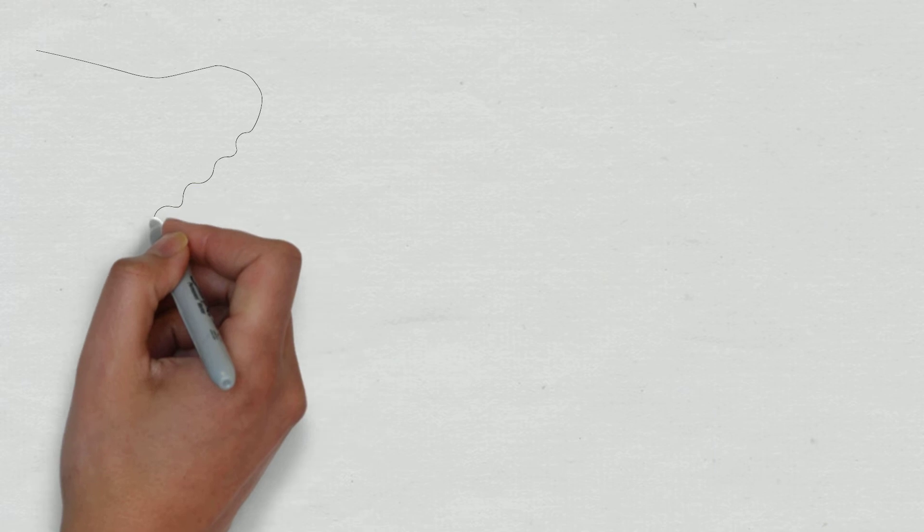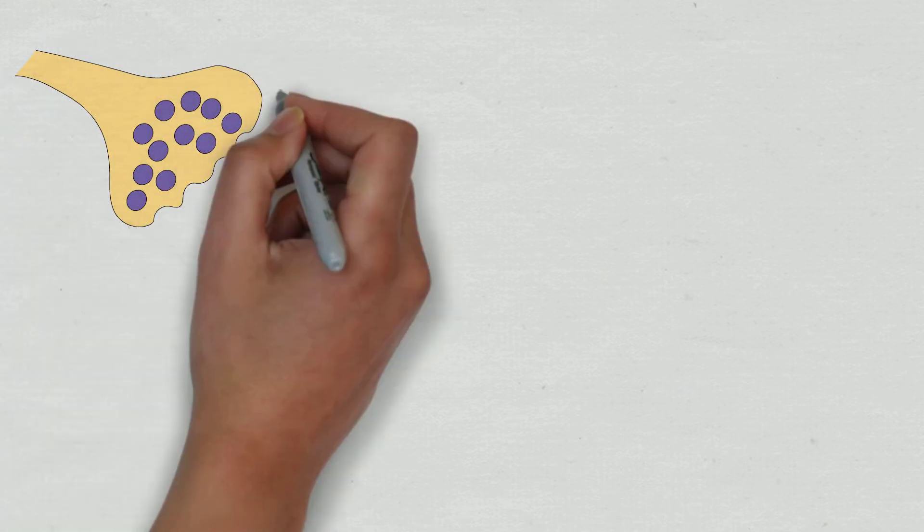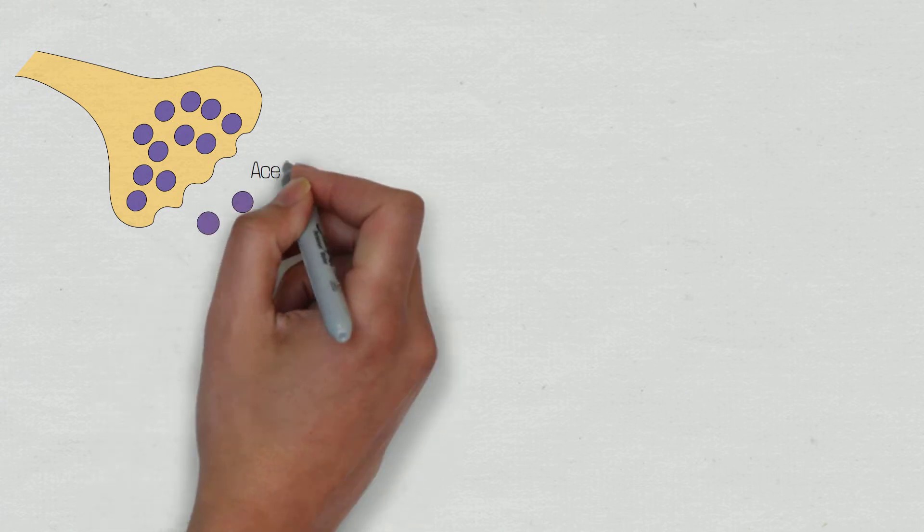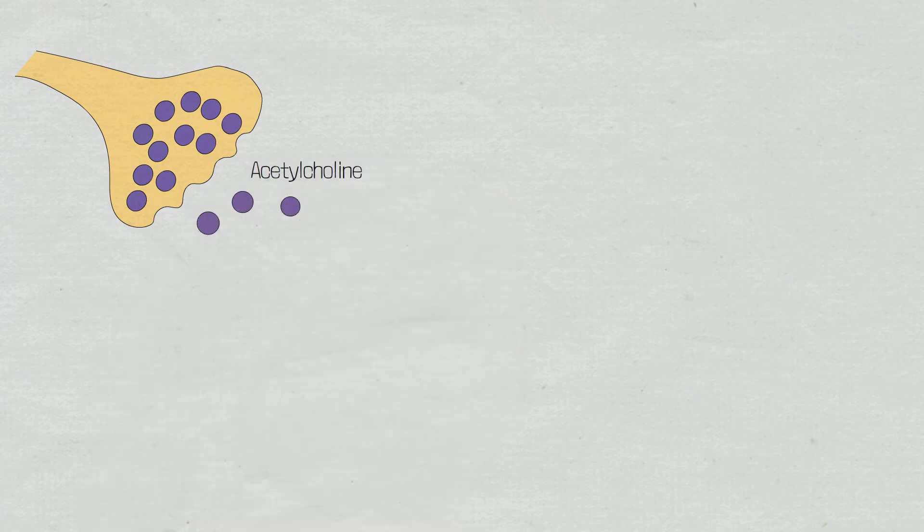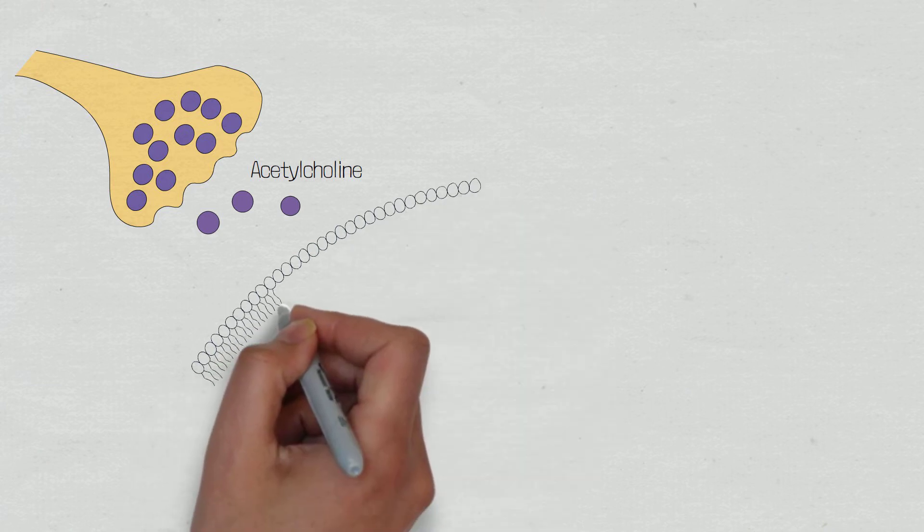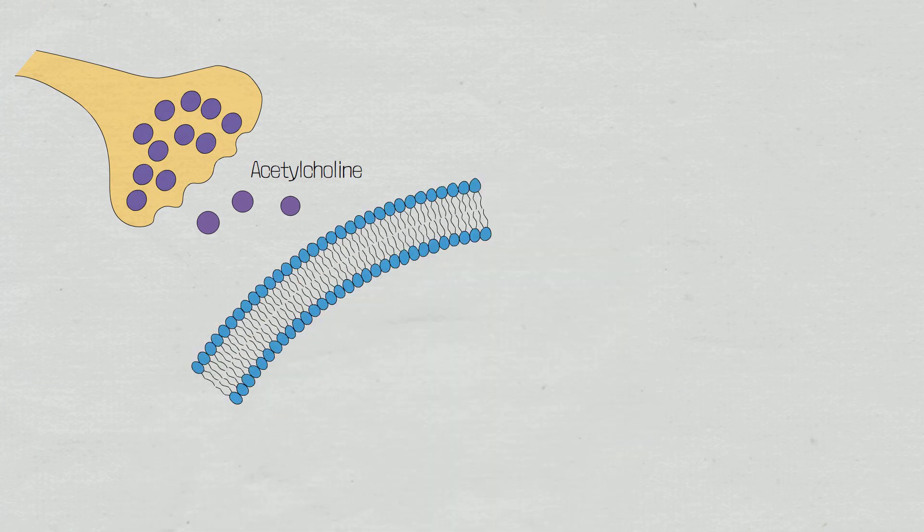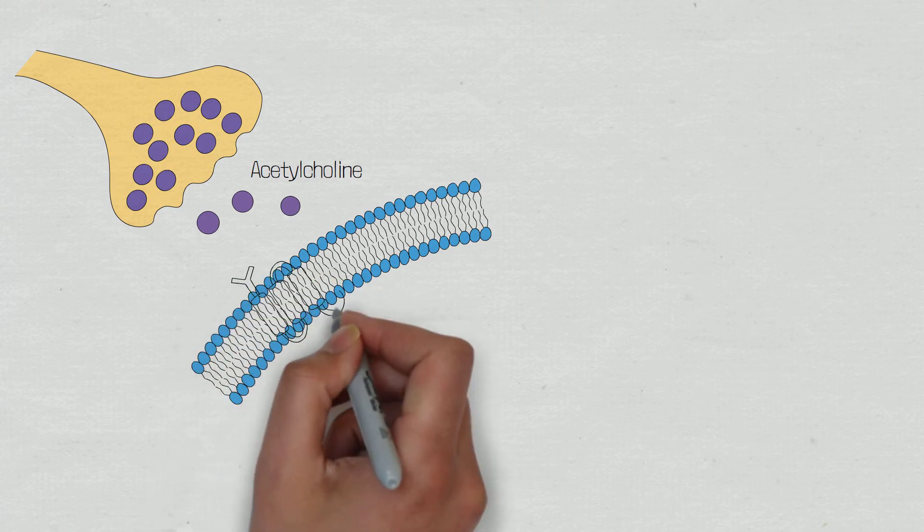When acetylcholine is released, it will bind to its target receptor. In this case, the muscarinic type 3 receptor. When these receptors are stimulated, it causes an intracellular cascade to take place, which we will discuss shortly.